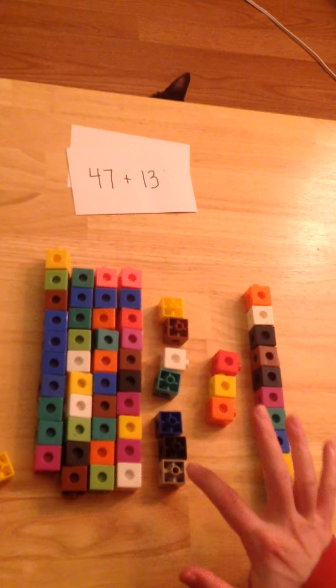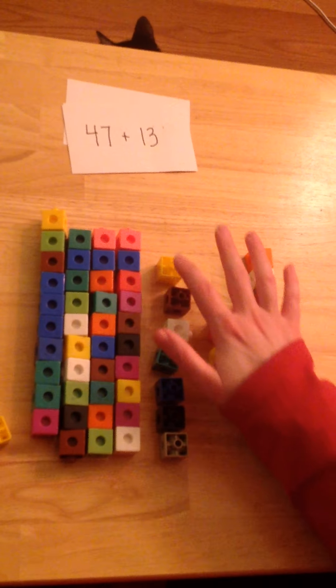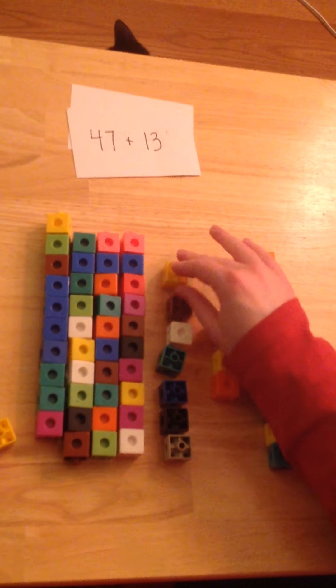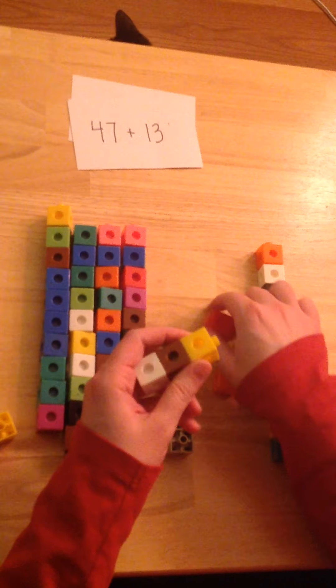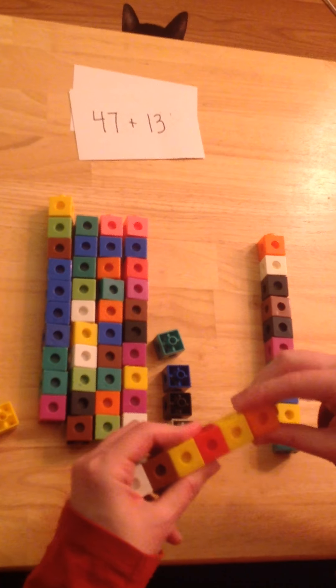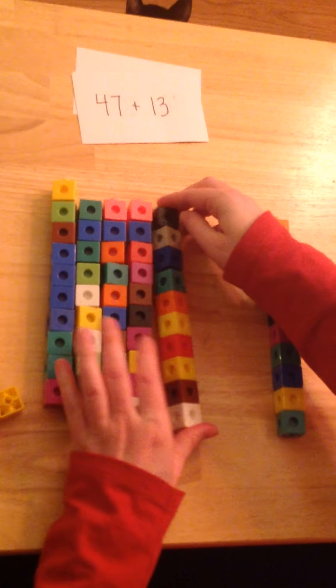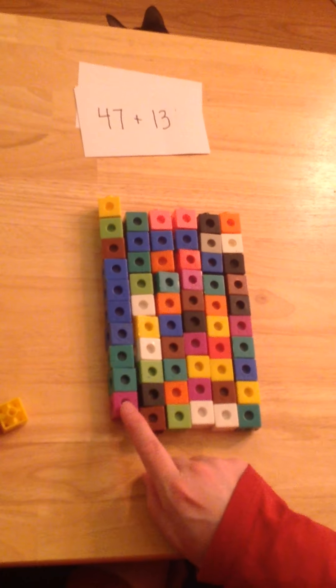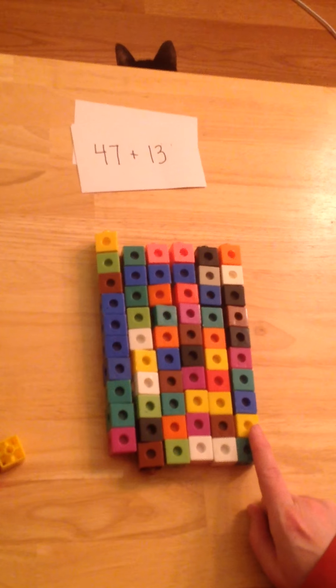I'm going to count my 1s first. 1, 2, 3, 4, 5, 6, 7, 8, 9, 10. 10 is the number. If I have 10 1s, I'm going to make a new 10. I have exactly 10 1s. So my answer is 10, 20, 30, 40, 50, 60.